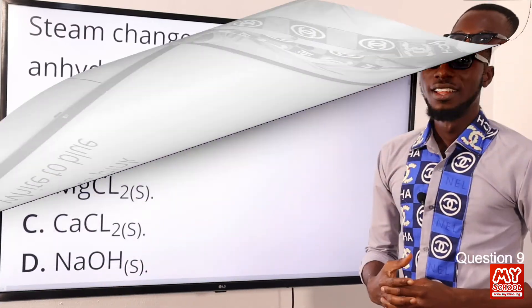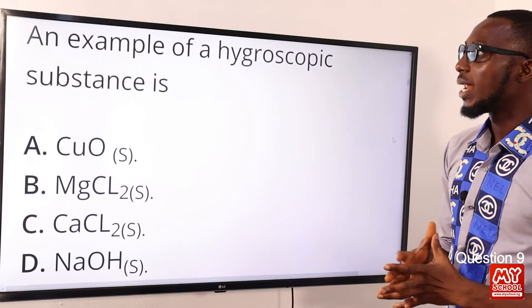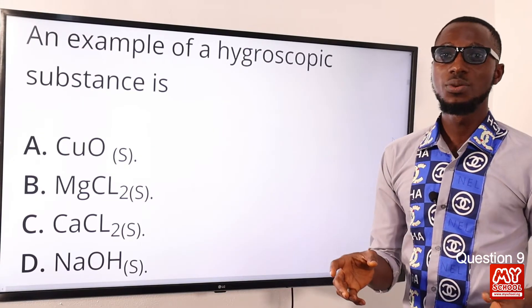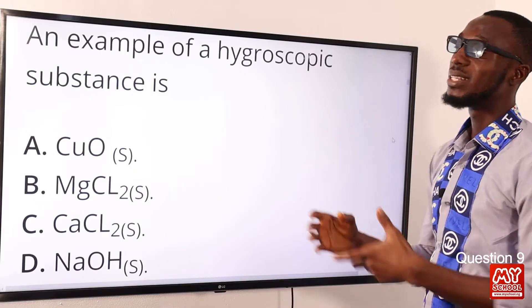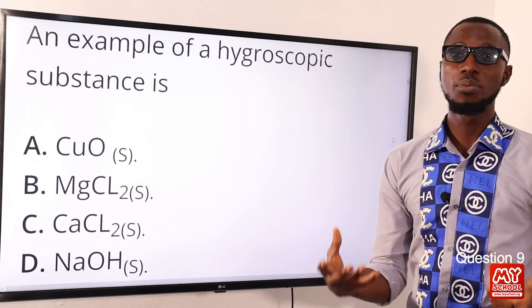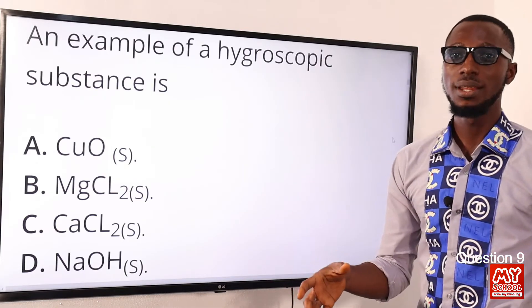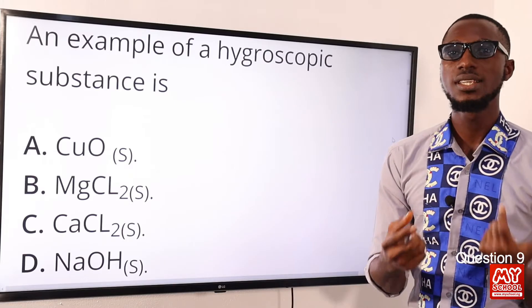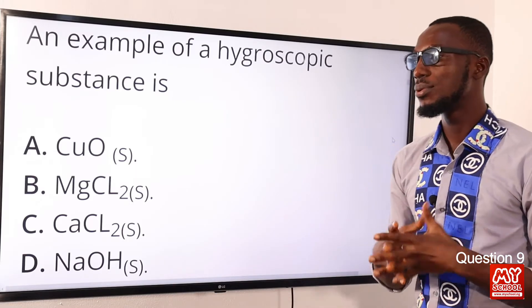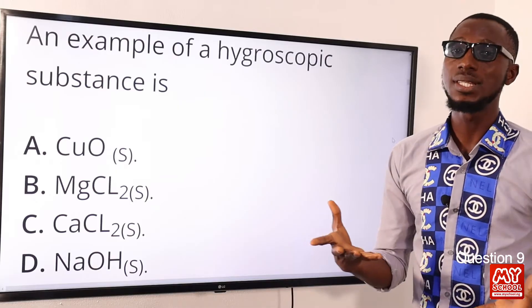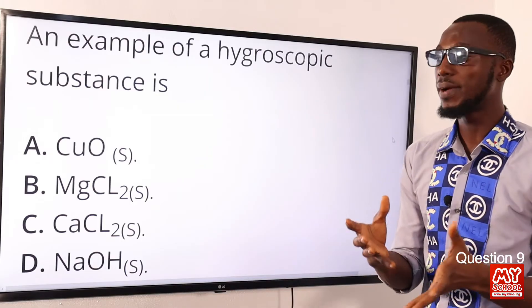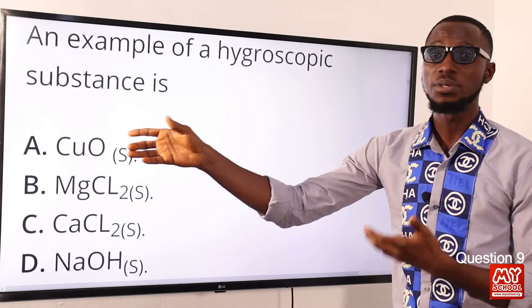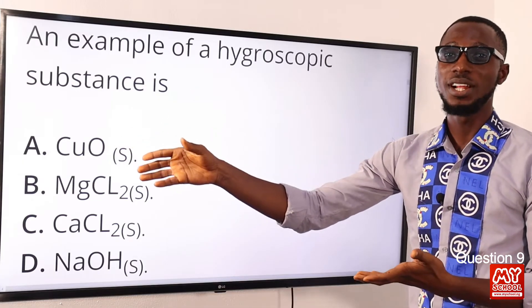Question nine: an example of a hygroscopic substance is what? When a substance is hygroscopic, it absorbs water when exposed to the surrounding, but it doesn't turn into a solution. If it is solid, it can become sticky. A perfect example from the options provided is copper oxide, found in option A. So option A is the correct option.